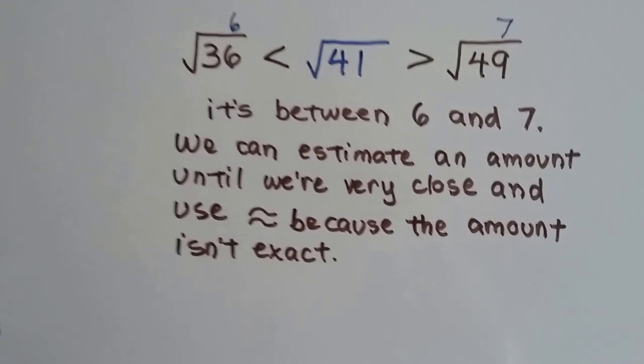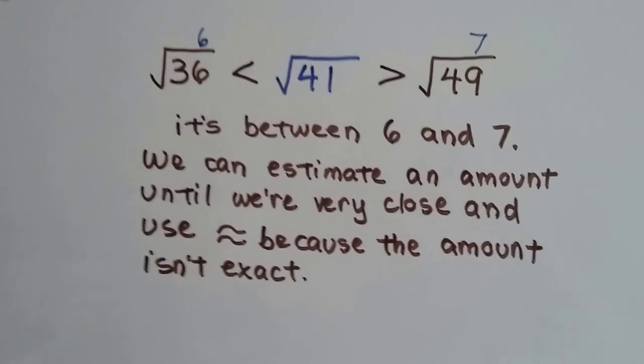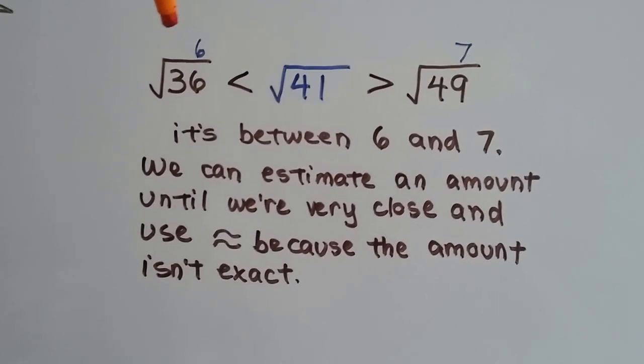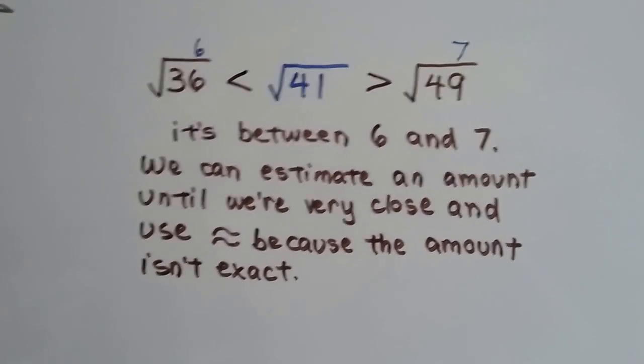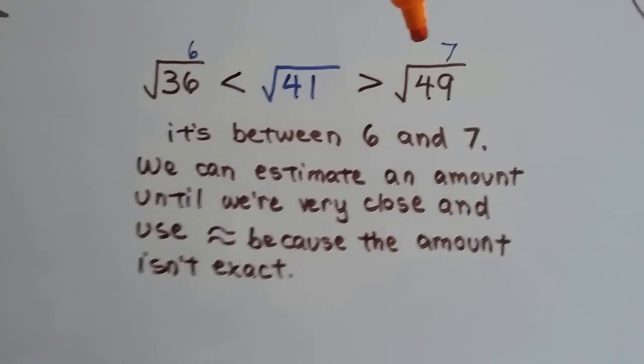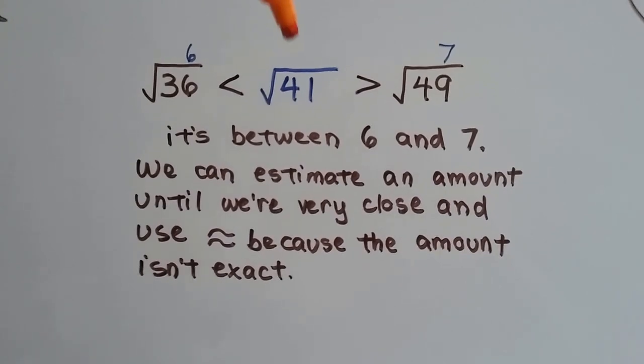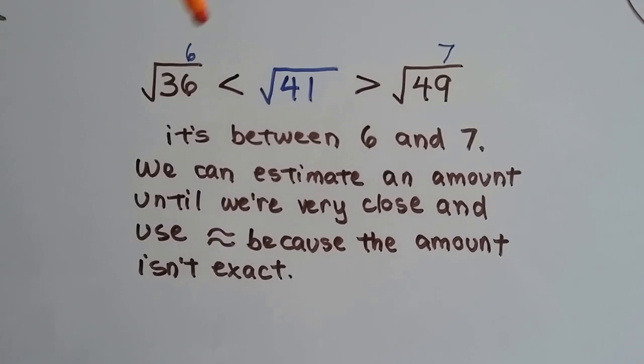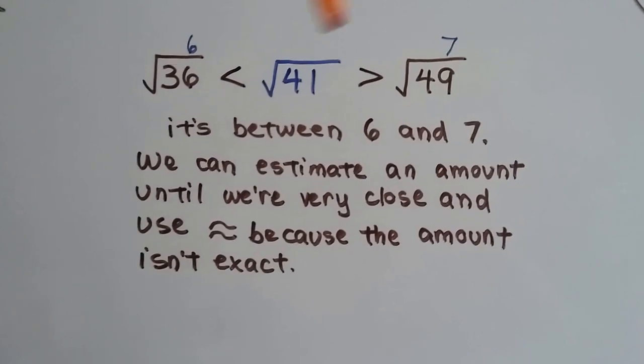Well, the best way to do it is to figure out what perfect squares it's between. 36 is a perfect square, because that's 6 times 6. And 49 is a perfect square, because that's 7 times 7. So the square root of 41 is somewhere between 6 and 7. So it's a decimal.